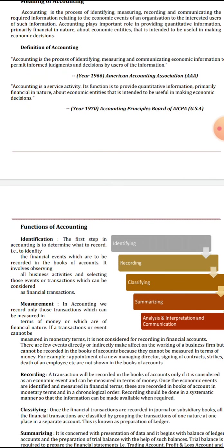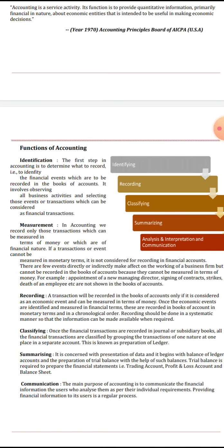The functions of accounting — the first is identification. The first step in accounting is to determine what to record. We should know what to record. It involves observing all business activities and transactions to identify which financial events should be recorded in the books of accounts.